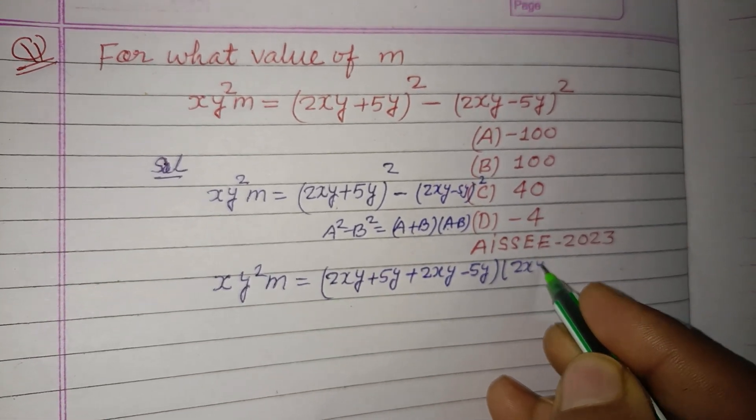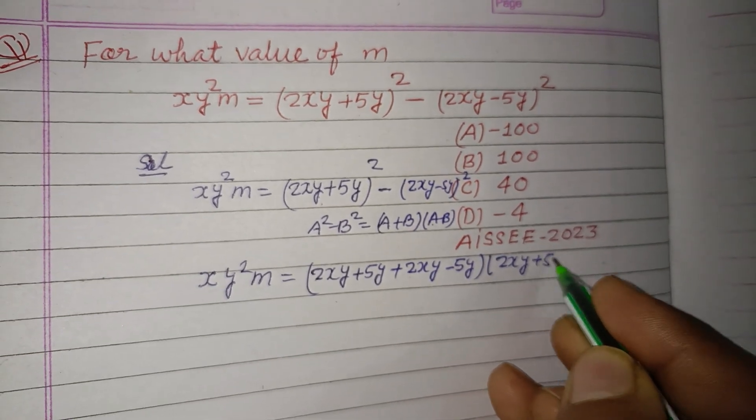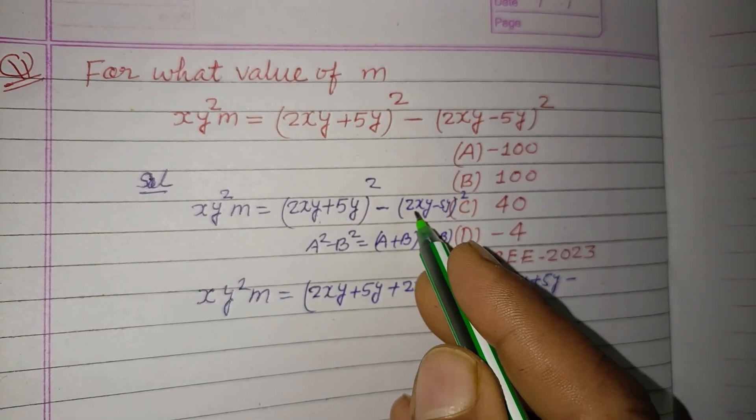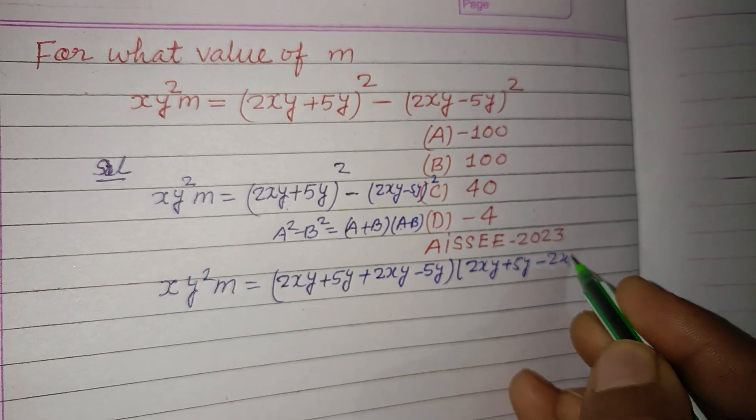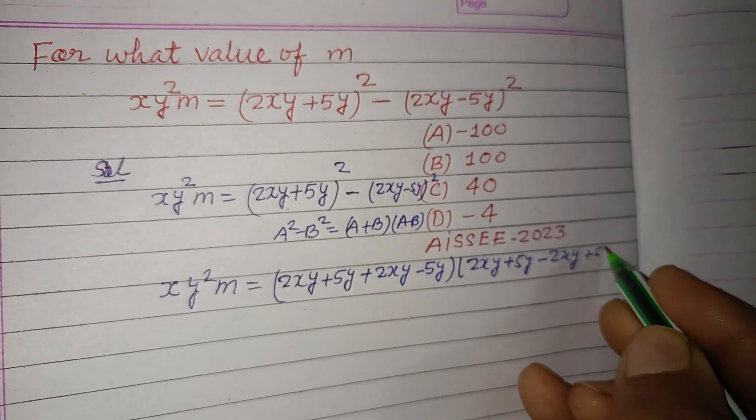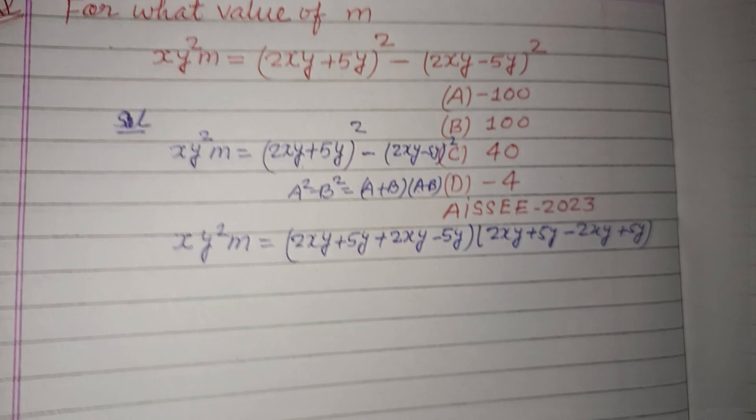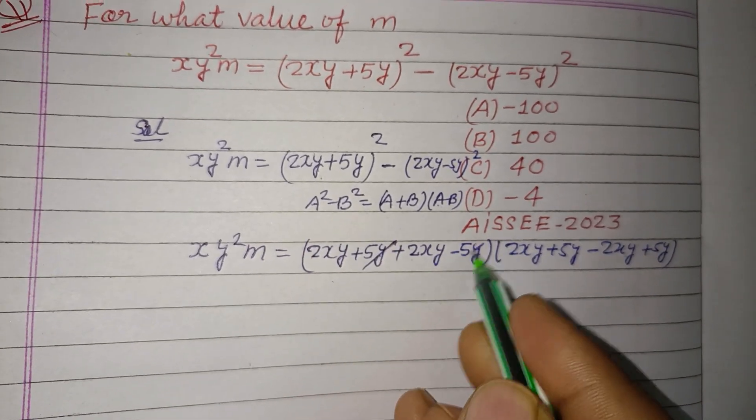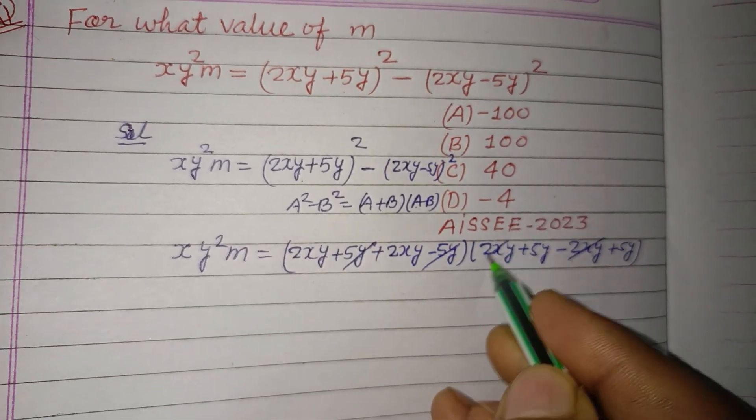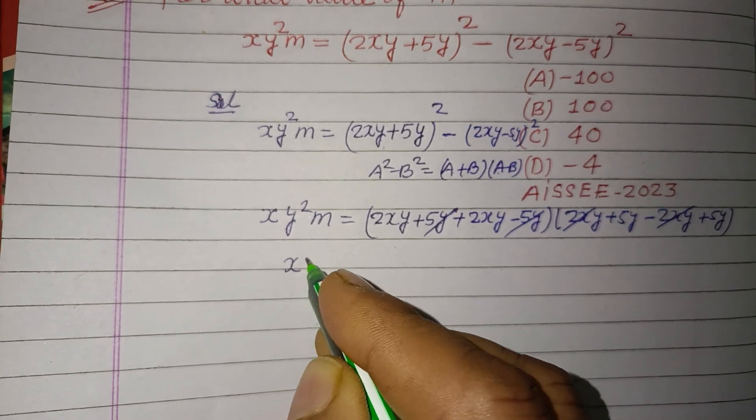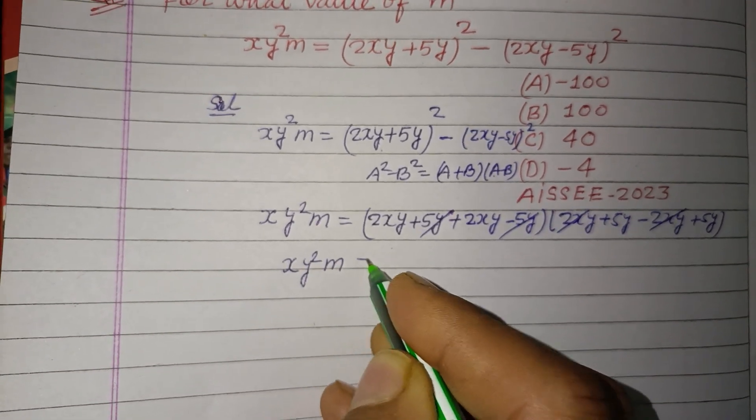So 2xy plus 5y minus 2xy plus 5y. Okay, here 5y, 5y cancel. Here 2xy, 2xy cancel.